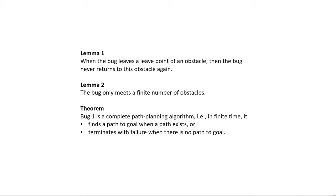Lemma 2 shows that the algorithm terminates in finite time. Then finally, the theorem that Bug 1 is a complete path planning algorithm says that it will find the path to the goal when a path exists, or terminate with failure if there is no path — all of that in finite time.